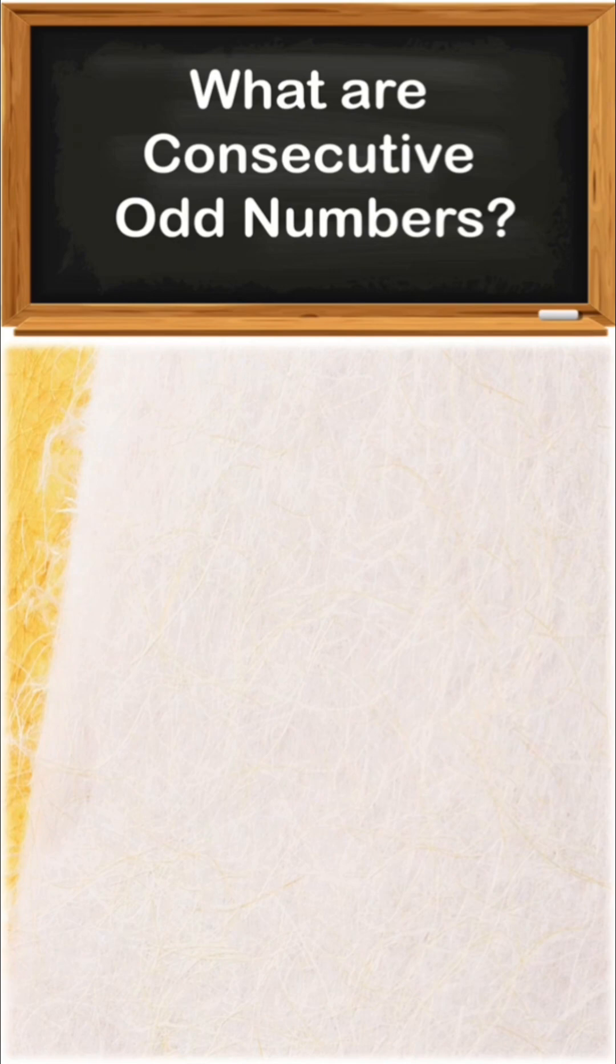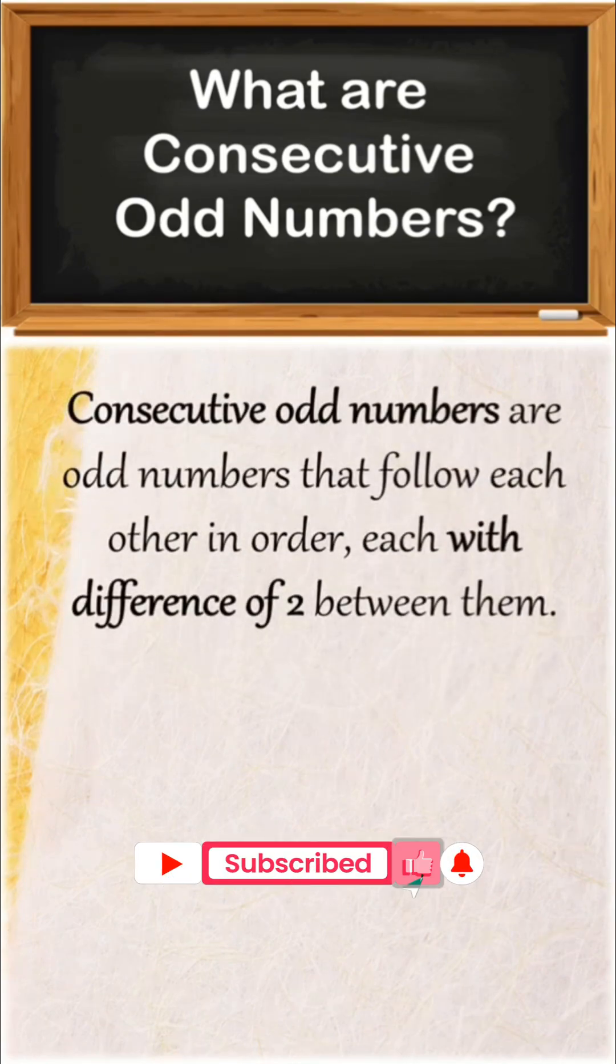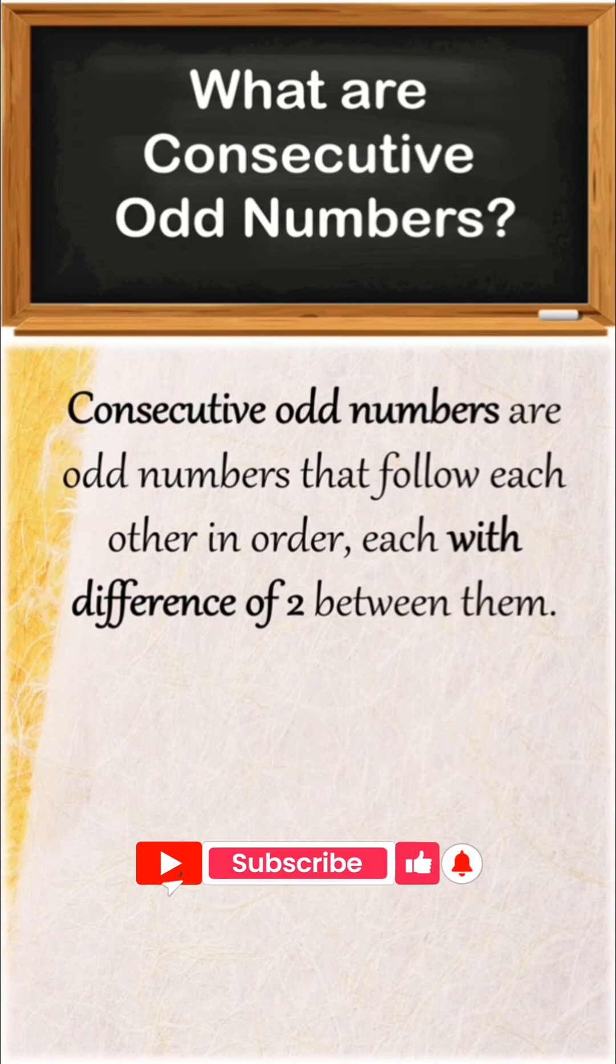What are consecutive odd numbers? Consecutive odd numbers are odd numbers that follow each other in order, each with a difference of two between them.